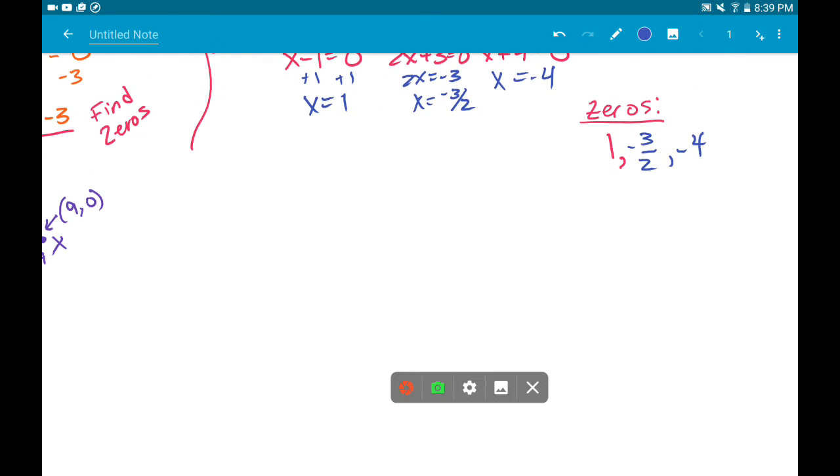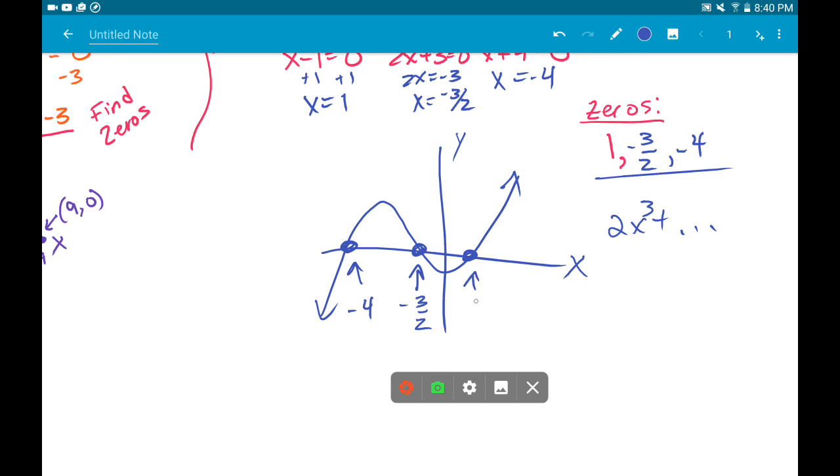30 more seconds. If you were to graph this cubic, whatever it was, I don't want to scroll back up, you might have a graph that looks something like this. And the idea here is, this graph is not drawn to scale, but these three zeros is where the cubic would hit zero. It would hit at negative 4, it hit at negative 3 halves, and it hit at 1.